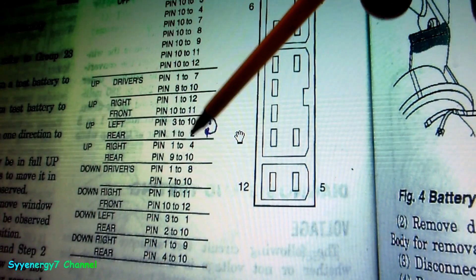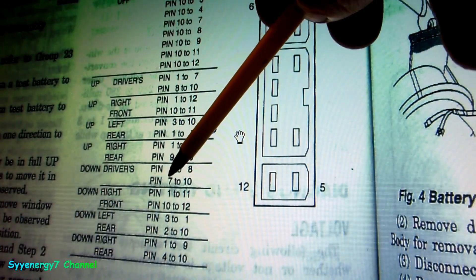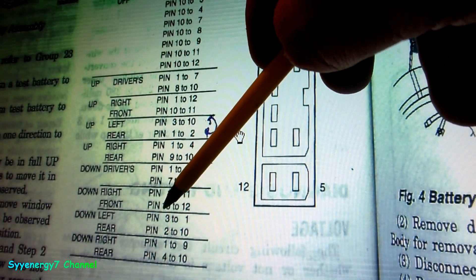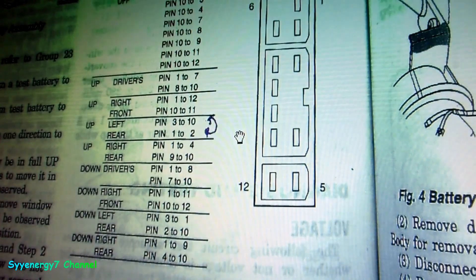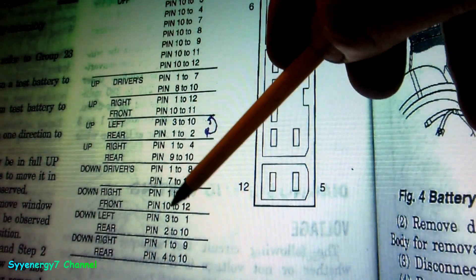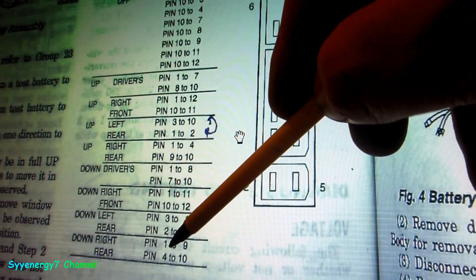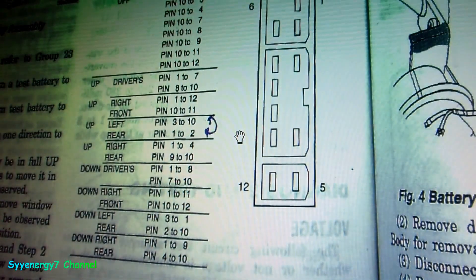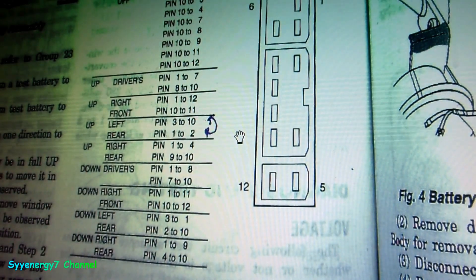Driver rear is 1 to 2, passenger rear is 1 to 4. Then drivers down is 1 to 8, passenger down on the front is 1 to 11, driver rear is 1 to 3. Driver passenger rear is 1 to 9. That actually makes the switch work. I'll give you a demo on how that really works.